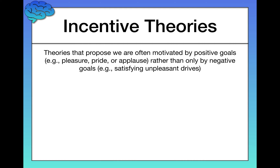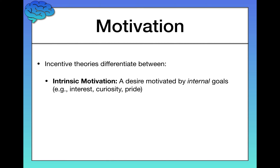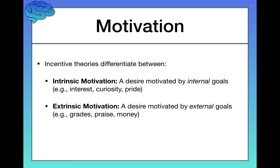Incentive theories differentiate between two types of motivation. One is intrinsic motivation — a desire motivated by internal goals. Intrinsic motivation includes things like being interested in something internally, being curious about something, or feeling proud of something. In contrast, extrinsic motivation is a desire motivated by external goals — for example, grades, praise from other people, or receiving money for a job.